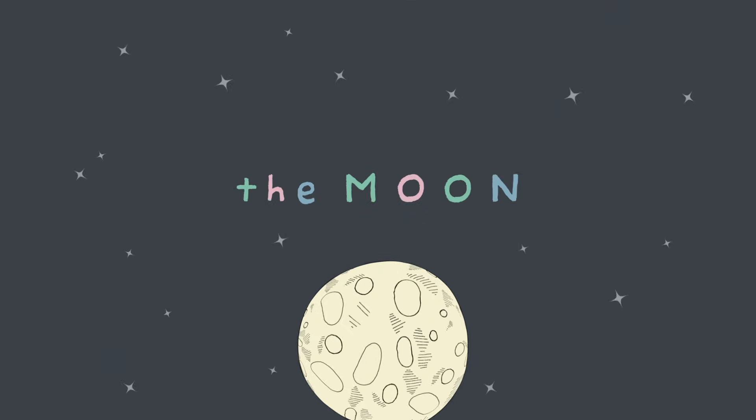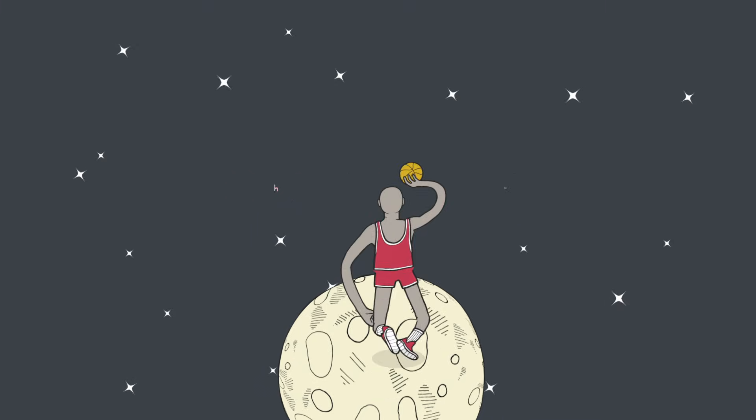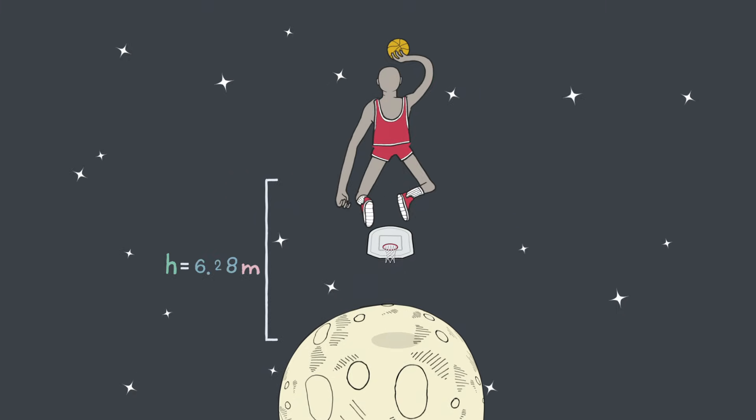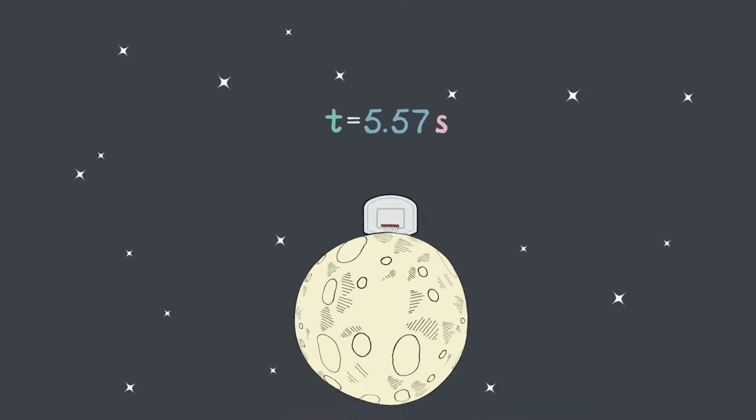But a game on the moon would be quite spectacular. MJ could take off from behind half-court, jumping over six meters high, and his hang time of over five and a half seconds would be long enough for anyone to believe he could fly.